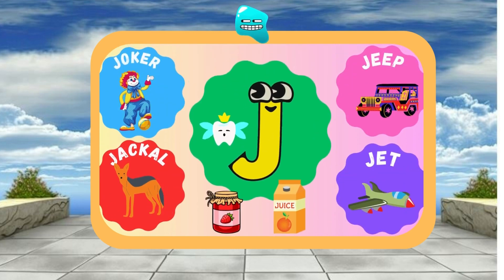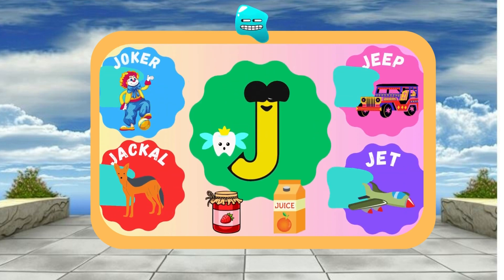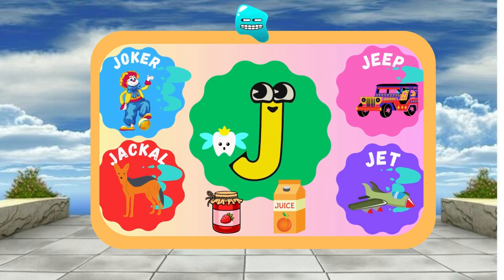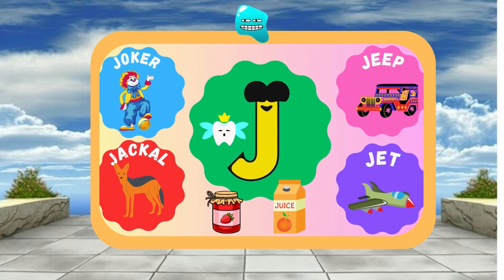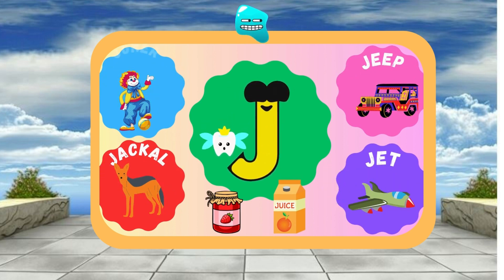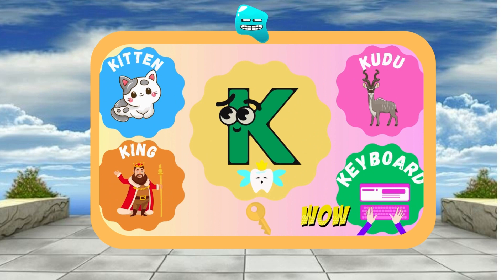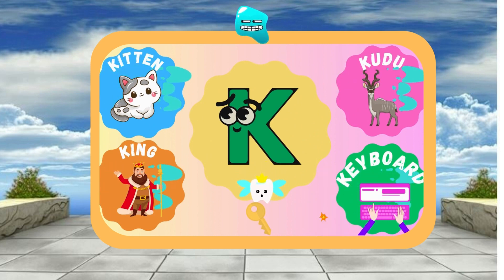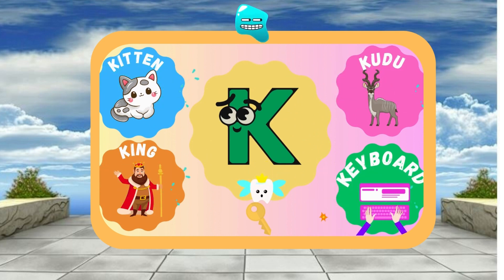J is for Jam — J, j, Jam. J is for Juice — J, j, Juice. K is for Key — K, k, Key. K is for King — K, k, King.